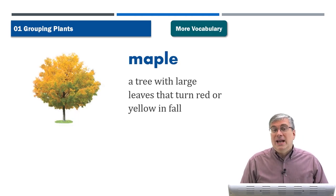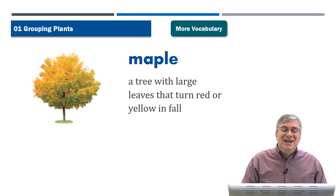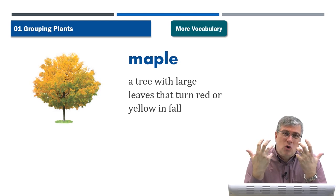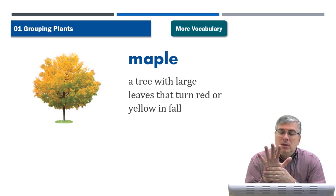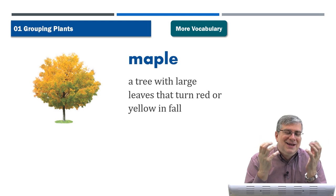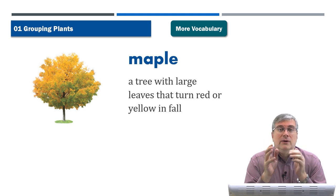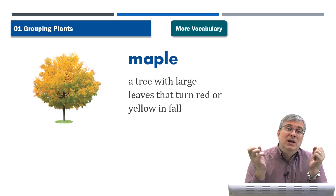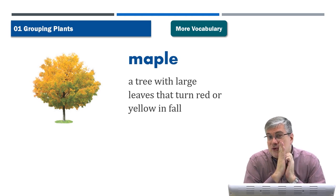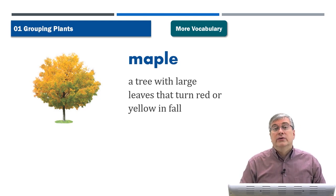'Maple' — Canada is famous for maple trees. Maple trees grow in northern climates where it's cooler. They have very large leaves that turn red or yellow in the fall. As it gets colder and winter approaches, the tree no longer needs its leaves, so they die and change color — very beautiful. Then the leaves fall off, and new leaves grow in spring. Maple trees are also famous for producing syrup that you put on your pancakes.